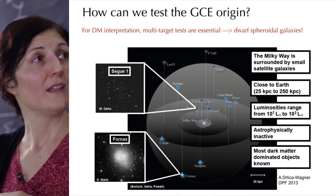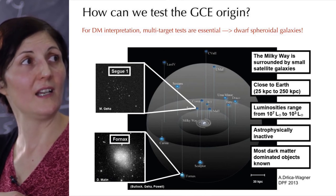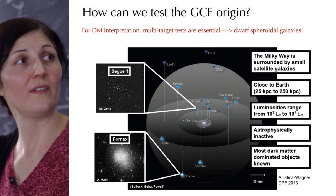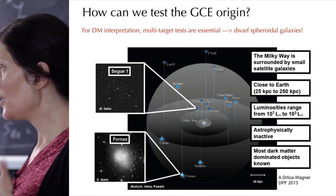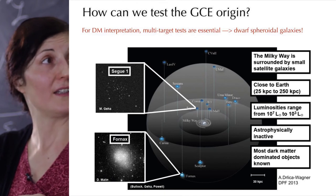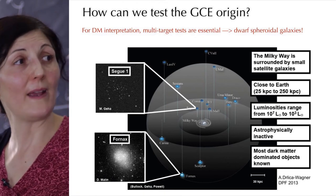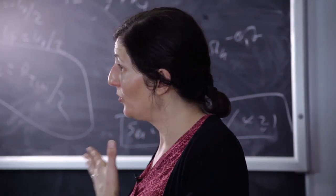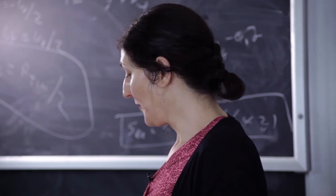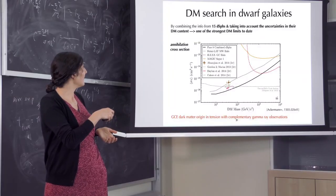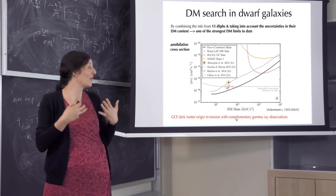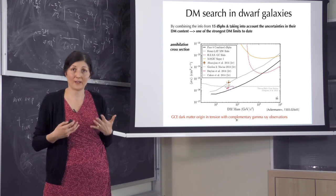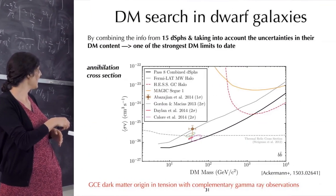The strategy here was to look in these dwarf spheroidal galaxies that I mentioned before. Around the Milky Way there are many dwarf spheroidal galaxies which I said have no astrophysics and are relatively close, they're 25 to 250 kiloparsecs from Earth. In each single target there is not much dark matter but because we have many and Fermi measures all skies, we have data from many galaxies. Basically one could do very good analysis, which is to combine information we have from 15 dwarf galaxies and to look for signal of dark matter.